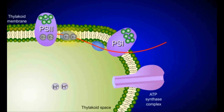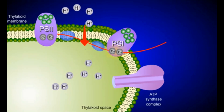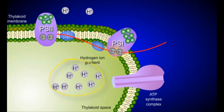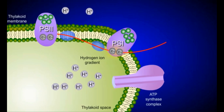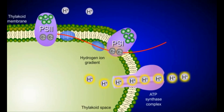The electrons continue down the electron transport chain, releasing stored energy as they move. This energy is used to create a hydrogen ion gradient — a protein pumps hydrogen ions from the stroma into the thylakoid space, creating a high concentration of ions there relative to the stroma. This gradient contains a large amount of potential energy, which is used by an enzyme called ATP synthase. The hydrogen ions flow down their concentration gradient through a channel in ATP synthase, releasing energy that is used to add a phosphate to ADP, forming ATP.